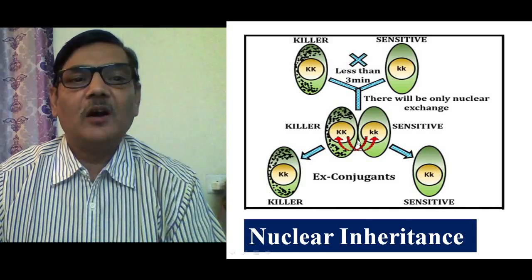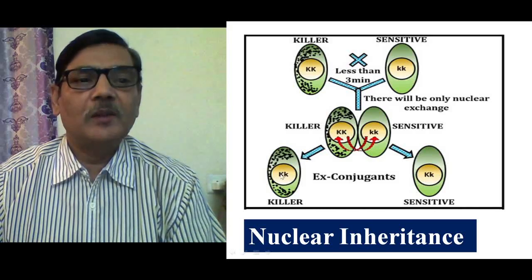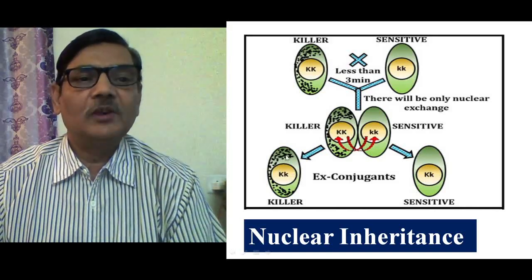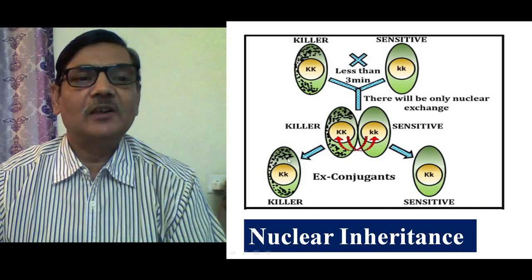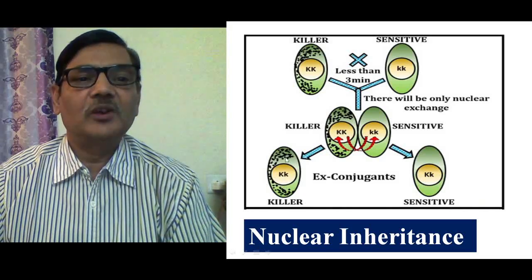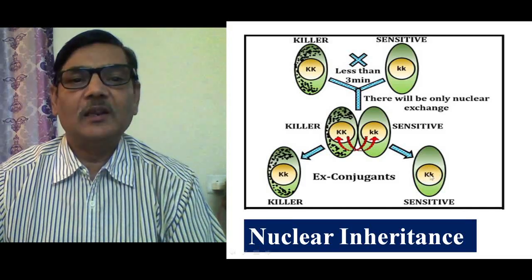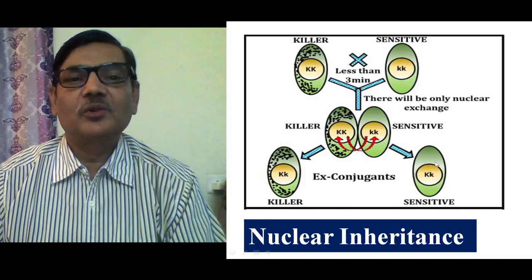After short conjugation, the two ex-conjugants — those paramecia which have separated after conjugation — will have genotype capital K small k and capital K small k. The left one remains a killer because it possesses the dominant allele capital K and retained its kappa particles during conjugation. The right one, although it received the capital K allele through nuclear exchange, did not receive kappa particles since there was no cytoplasmic exchange, so it remained sensitive.